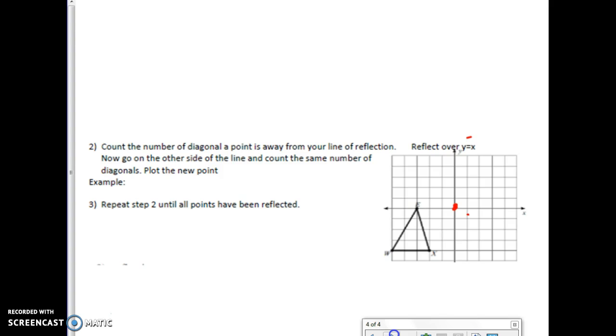Now, if x is 1, y is going to be negative 1. If x is 2, y is going to be negative 2. If x is 3, y is going to be negative 3. So this is what your line is going to look like. So that's what your line of reflection is going to look like.